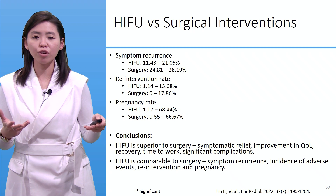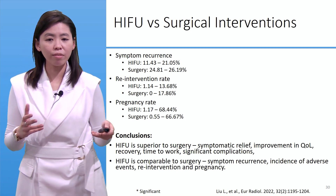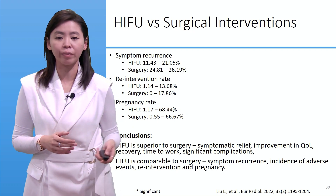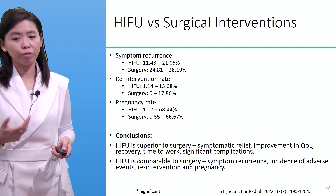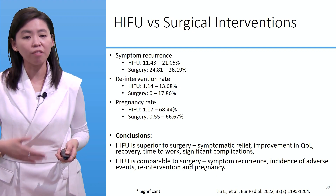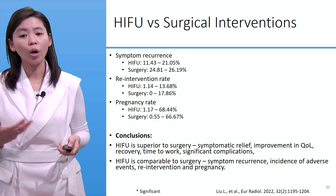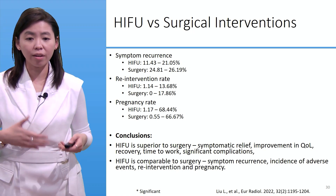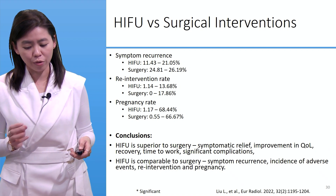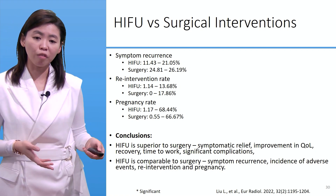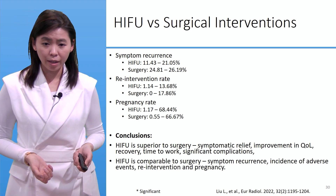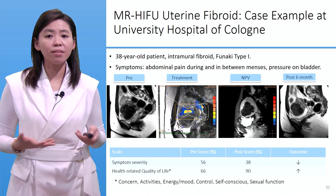Pregnancy rates between HIFU and surgery are quite comparable: 1.17–68% for HIFU versus 1–67% for surgery. The conclusion from this study is that HIFU is superior to surgery in terms of symptomatic relief, improvement in quality of life, and recovery time to work. HIFU is comparable to surgery in terms of symptom recurrence, incidence of adverse events, re-intervention rate, and pregnancy.